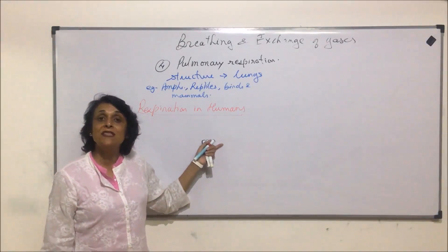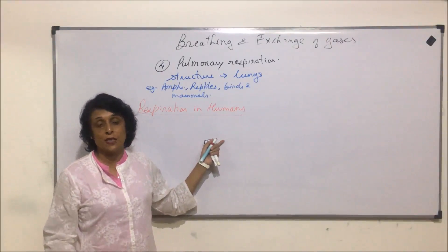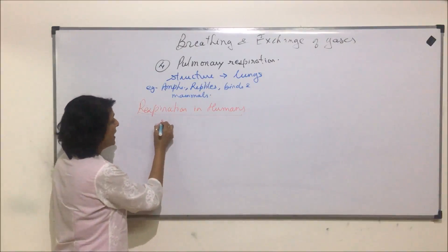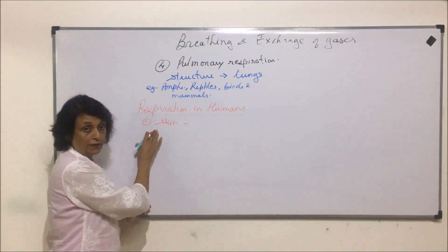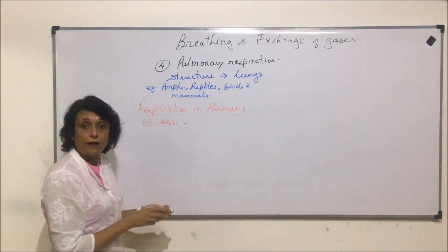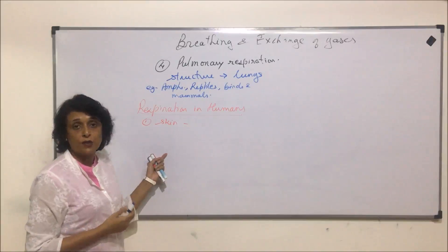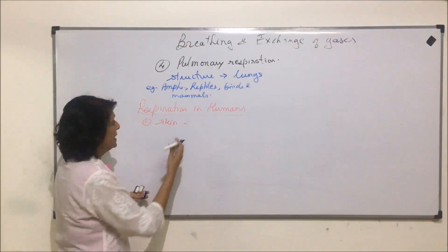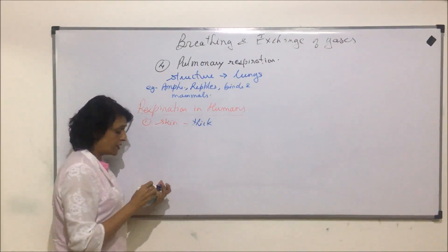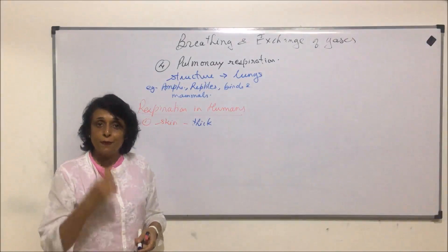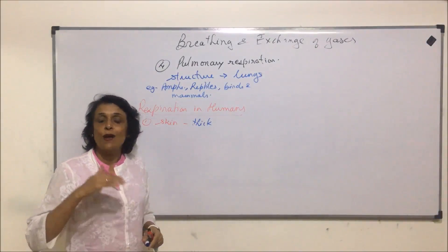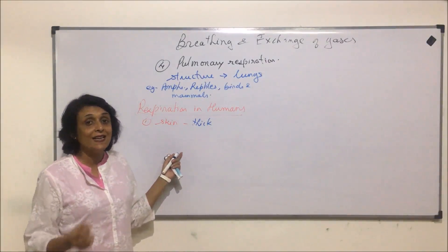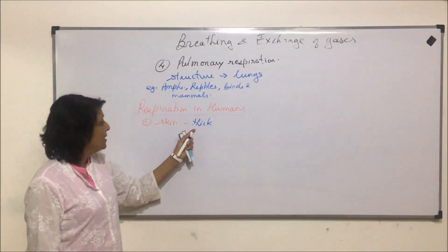Why is skin not the main respiratory structure in higher organisms? In humans, skin is not a very effective respiratory structure because, number one, skin is thick. Our skin is made up of two layers — the epidermis and dermis — and the epidermis also has many layers. The upper cells are slightly keratinized, so the skin is thick.